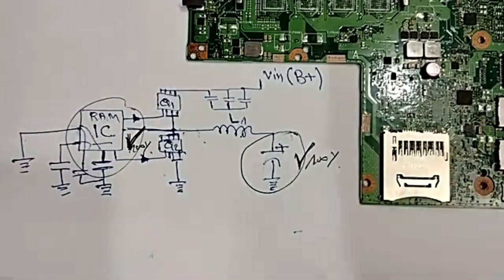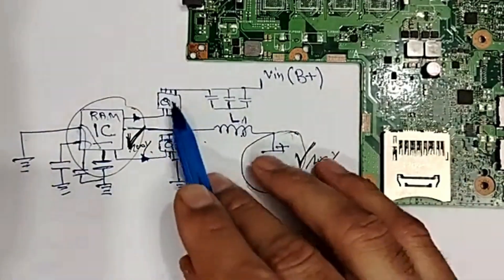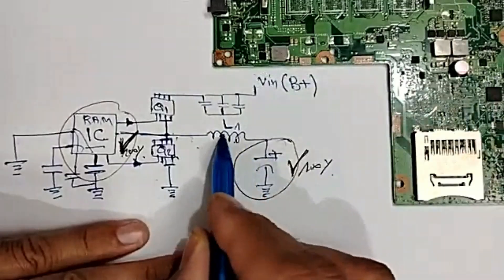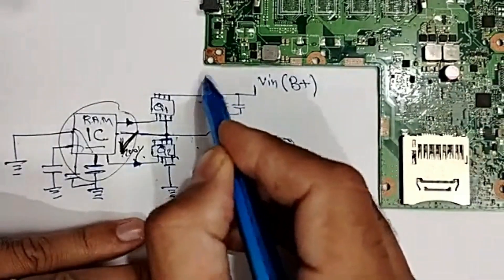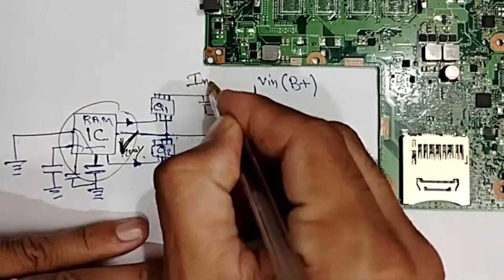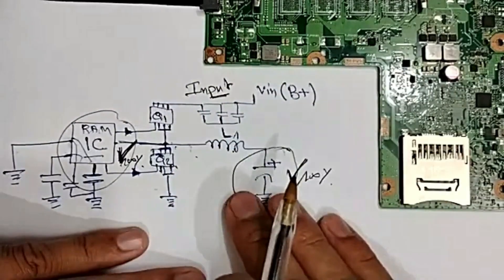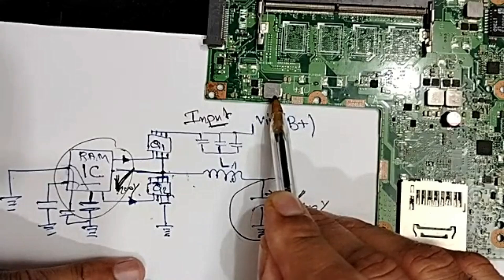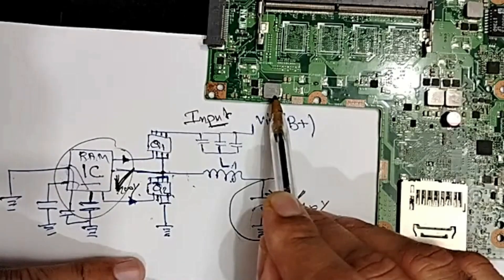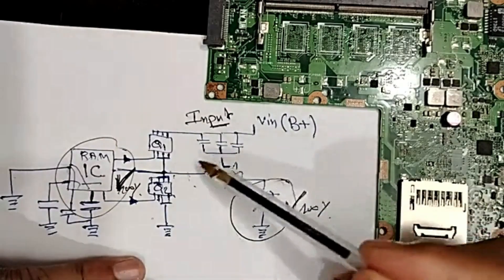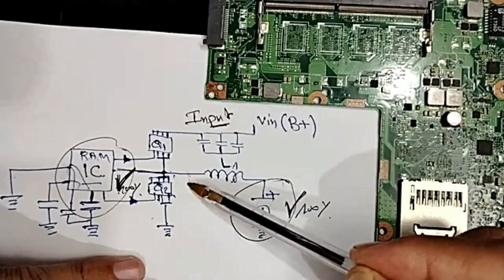So this is the circuit basically. Now let's locate these components. Here we have the inductor — this is the input. If you understand this schematic, one circuit for all circuits: if you understand just this circuit, you can understand and repair shorts in every motherboard.